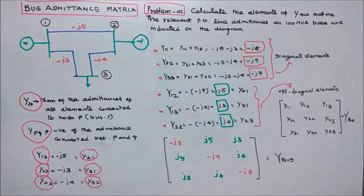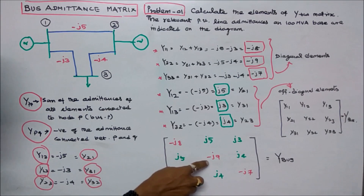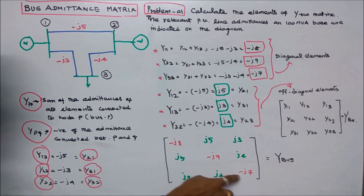Those are the diagonal elements: minus J8, minus J9, and minus J7.